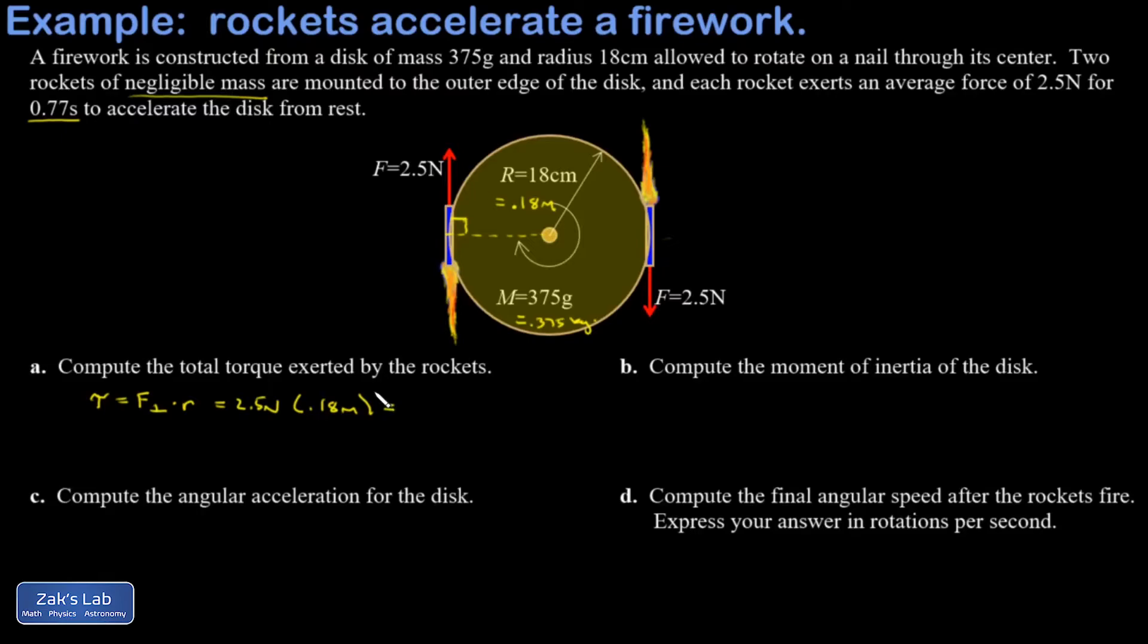When I do that, I get 0.45 newton meters. But that was just one rocket, so I have to multiply by 2. And I have a total torque of 0.90 newton meters in the clockwise direction.